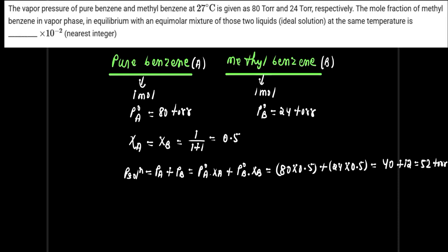The pressure of the solution is 52 Torr. The question asks to find the mole fraction of methyl benzene in the vapor phase. So we'll find Y_B, which equals P_B upon P_solution. The value of P_B we obtained is 24 into 0.5, which is 12.